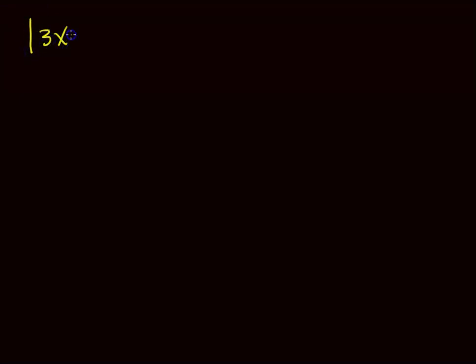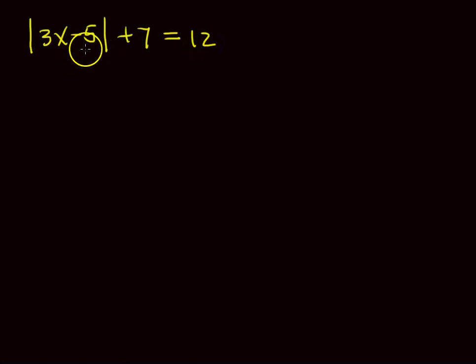Let's do an example. Suppose we have the absolute value of 3X minus 5, and we add 7 to that, and that equals 12.